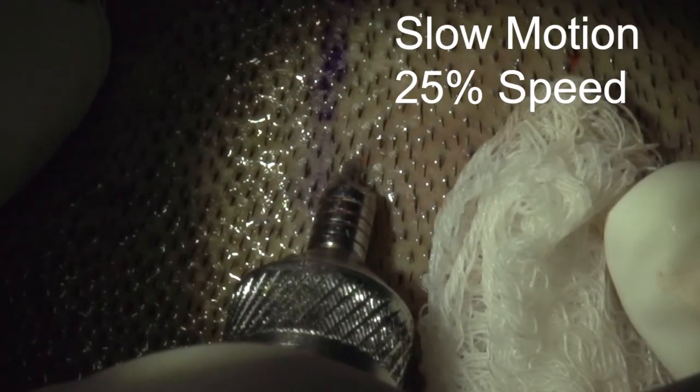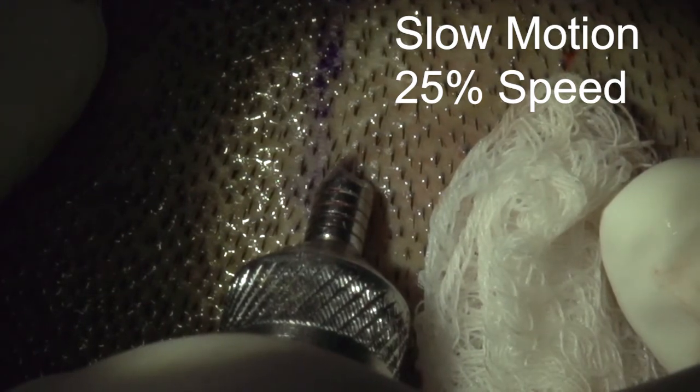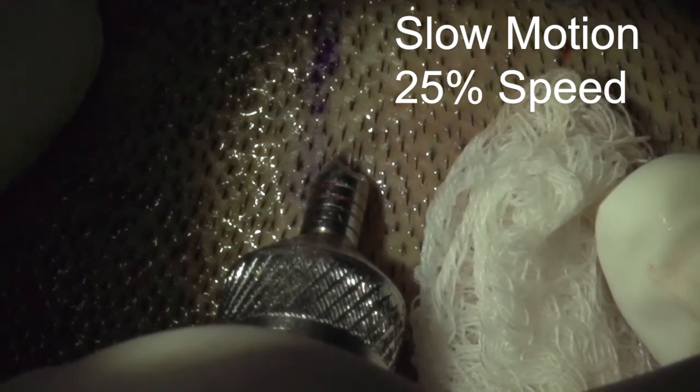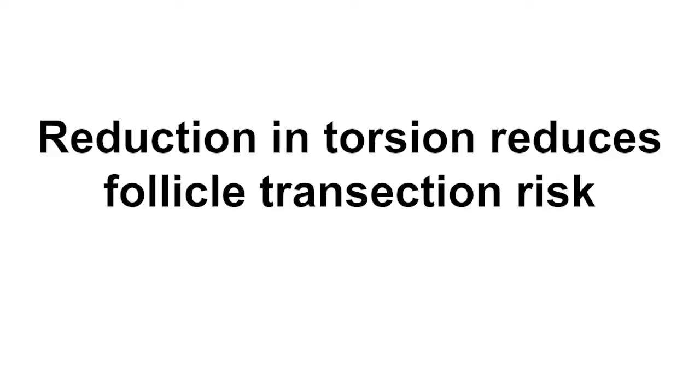As one incises deeper into the skin surface, the loose outer free margin of the graft increases. This free part tends to begin rotating in the direction of the punch, clockwise or counterclockwise. Opening the punch walls also reduces resistance internally, which results in a decrease in graft torsion. Reducing torsion reduces graft spin in the direction of the punch. Reduction in torsion also reduces follicle transection risk.